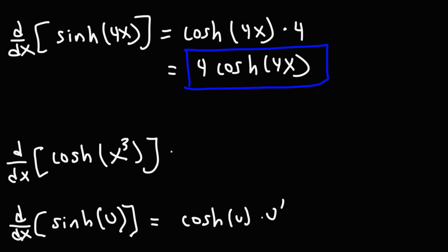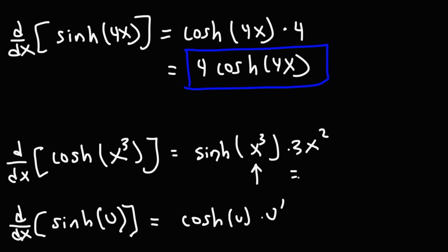For the next one, the derivative of hyperbolic cosine is hyperbolic sine. We keep the inside the same and take the derivative of the inside. The derivative of x cubed is 3x squared. So the answer is 3x squared times hyperbolic sine of x cubed.